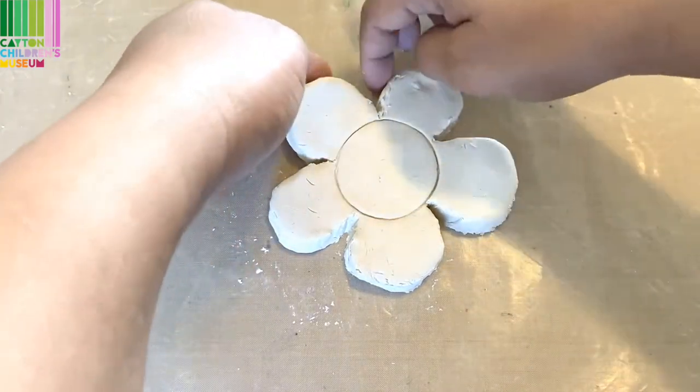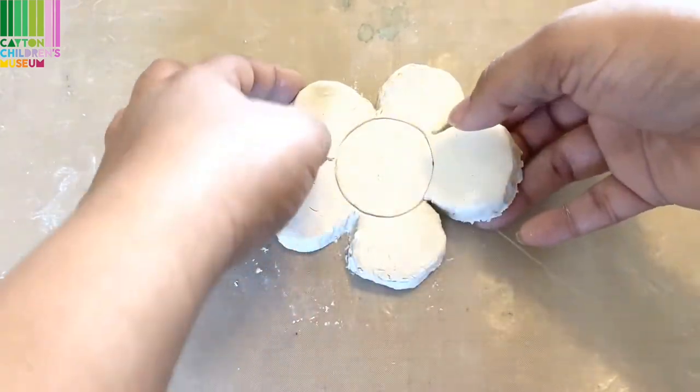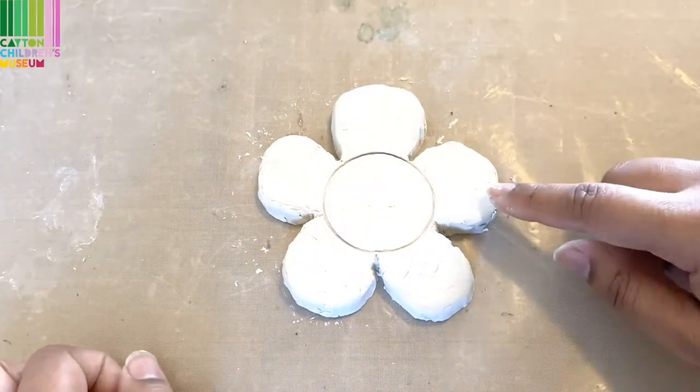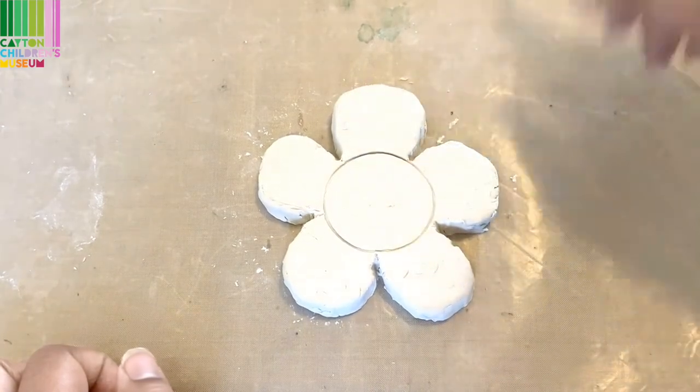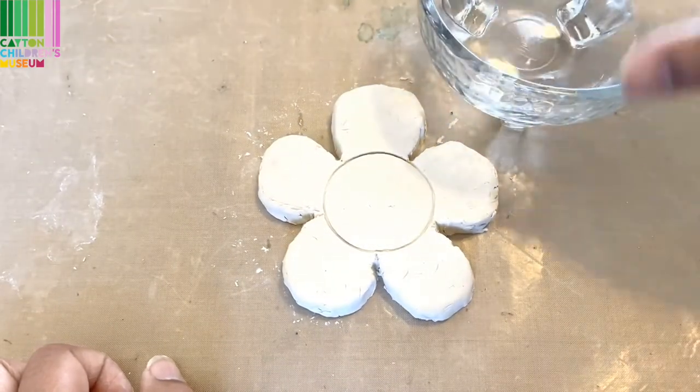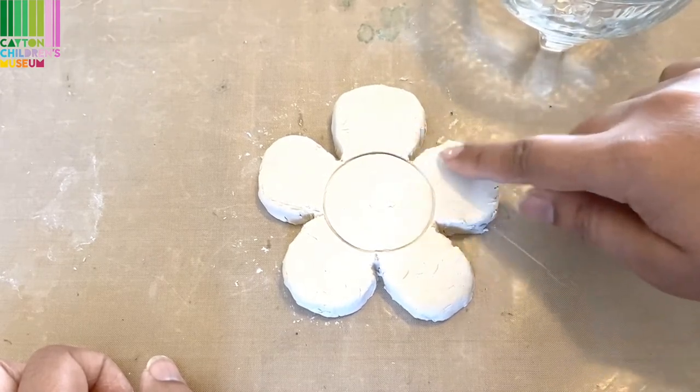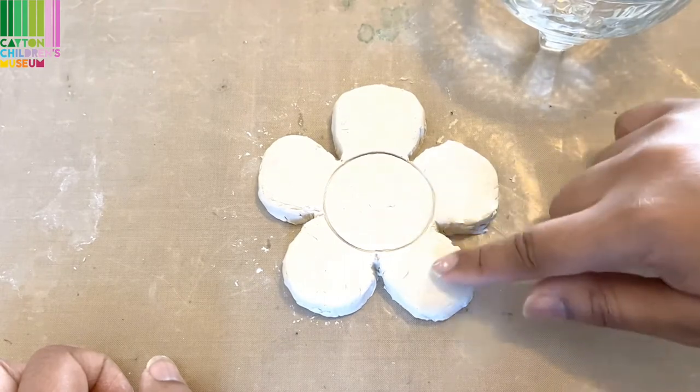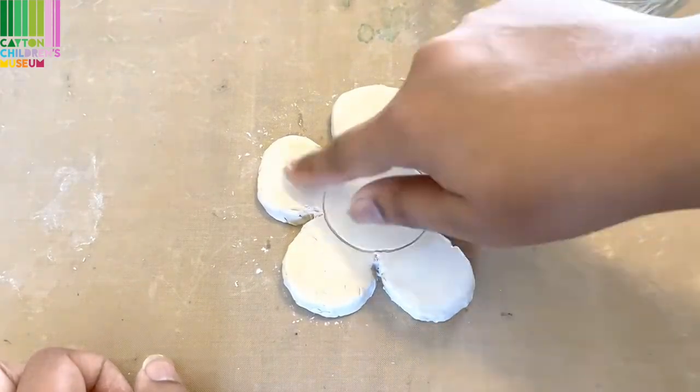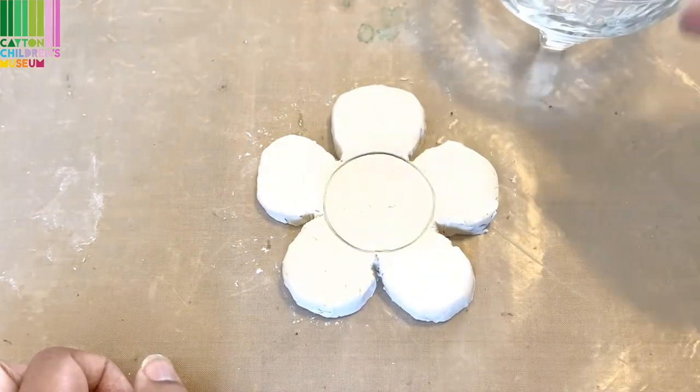You'll also want to pick it up to make sure it's not sticking too much to your surface. Now you'll see I've gotten some fingernail prints into here. And I kind of want that to be smoothed out. So I'm going to take my little bowl with water, dip my finger into a little bit of the water. And I'm just going to use my finger to smooth out those fingernail marks. And I'm not pressing too hard. Just a light touch with some water.